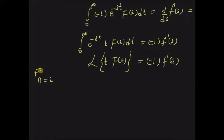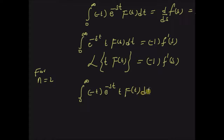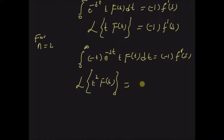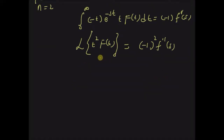For n equal to two, we differentiate this equation with respect to s again: the integral from zero to infinity of (-t) · e^(-st) · t · f(t) dt is equal to (-1) · F''(s), that is the derivative of F'(s) which is F''(s). By sending the minus one to the other side, we can clearly see that the Laplace transform of t² · f(t) is equal to (-1)² · F''(s). Thus the theorem is also valid for n equal to two.